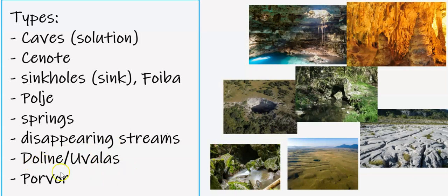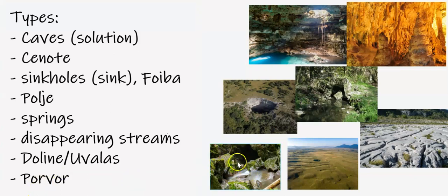Dolines and uvalas are depressions — a collapsed doline is where the overburden rock collapses into the void created by the lack of dissolved limestone. A solution doline is basically a sinkhole — 'sinkhole' is the general term while 'doline' is the more geological term. The ponor is the opening to the cave — it could be a lateral horizontal opening, as opposed to a sinkhole which is more vertical, or a swallet which is more diagonal. The ponor is that opening where you might see a stream disappear.